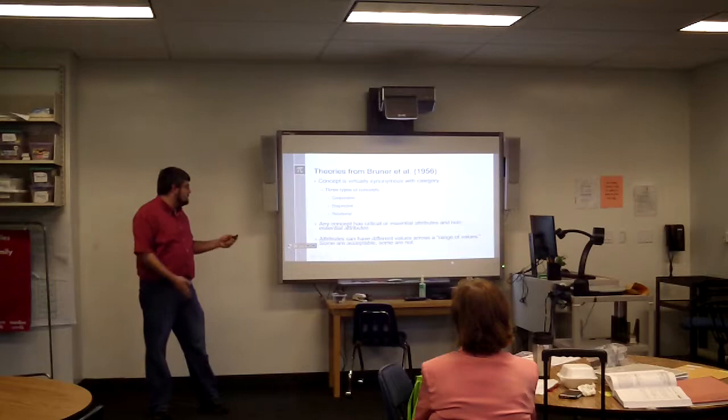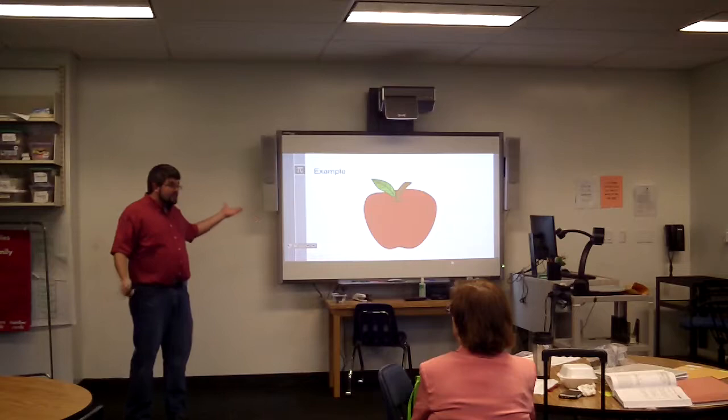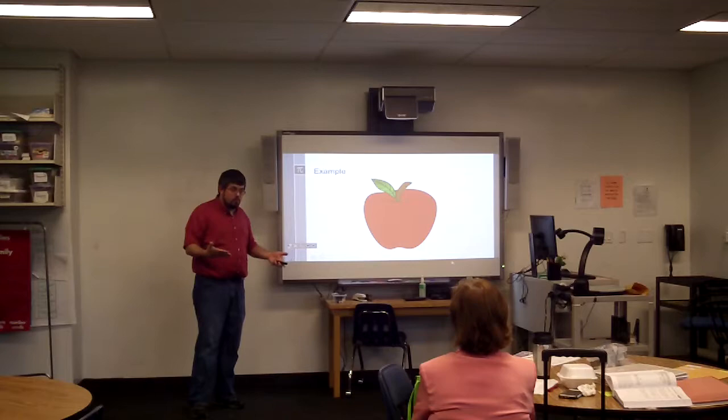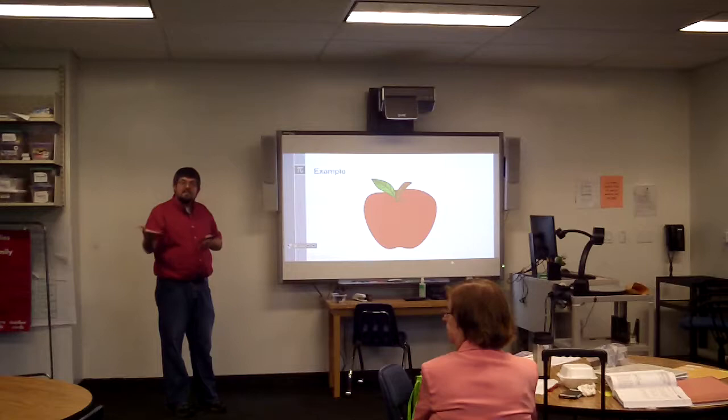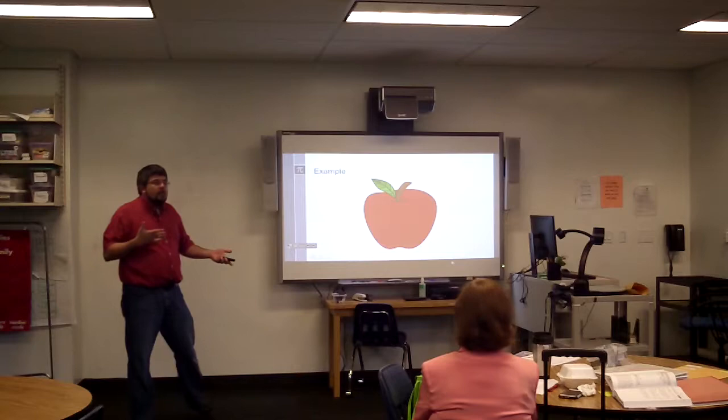Here's what I mean. For example, this is an apple — this is certainly an apple. An apple has attributes, as Bruner would say. What's one attribute about an apple? Red. Does it have to be red? No. What else could it be? Green or yellow, or somewhere in between.